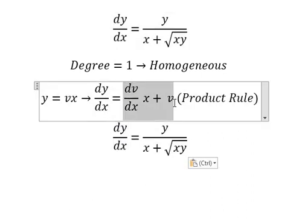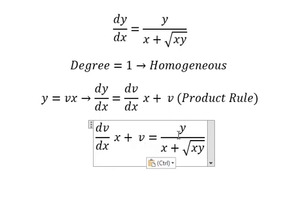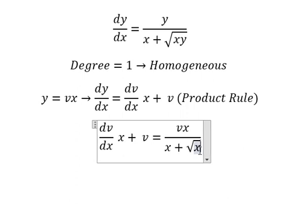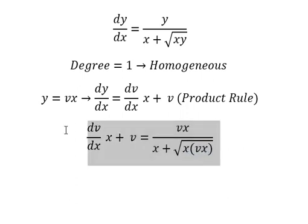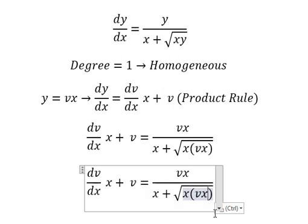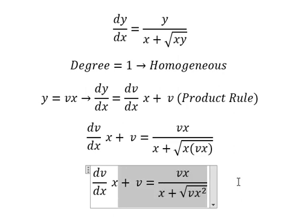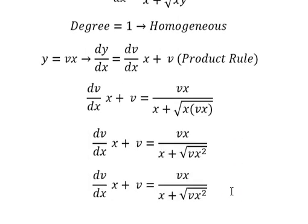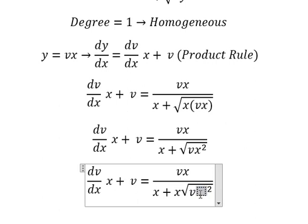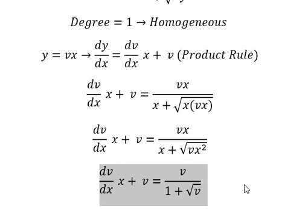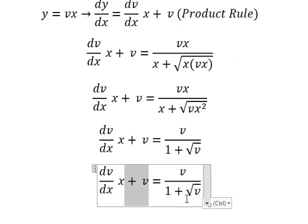Now we substitute y equals vx into the original equation. This gives us vx divided by x plus the square root of x times vx, which simplifies to vx divided by x plus the square root of vx squared.